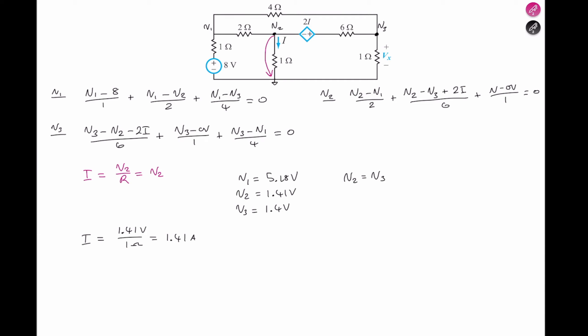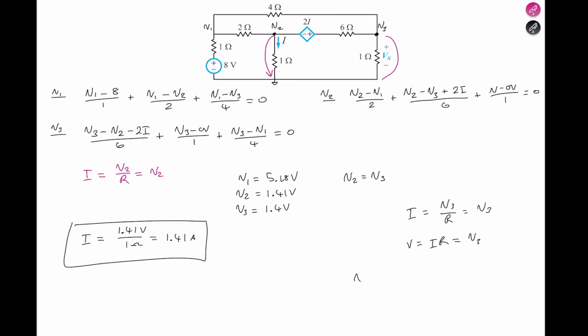Finding Vx: Vx equals V3. The current in that branch times R gives the voltage, and since R is 1 ohm, the voltage is just i times 1, which equals V3. So Vx equals V3, which is 1.41 volts. The magnitude of V3 is Vx. That's it — see you in the next problem, bye bye.